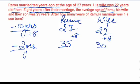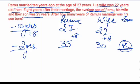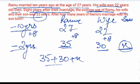So the question is saying the average age of Ramu, his wife, and their son was 23 years. So they have a son also, 2 years ago now. We'll assume the age of his son as X. We know that Ramu's age was 35 and his wife's age is 30 at this point. The average age they're telling is 23 years. So average age means 35 plus 30 plus X, divided by 3, equals 23.